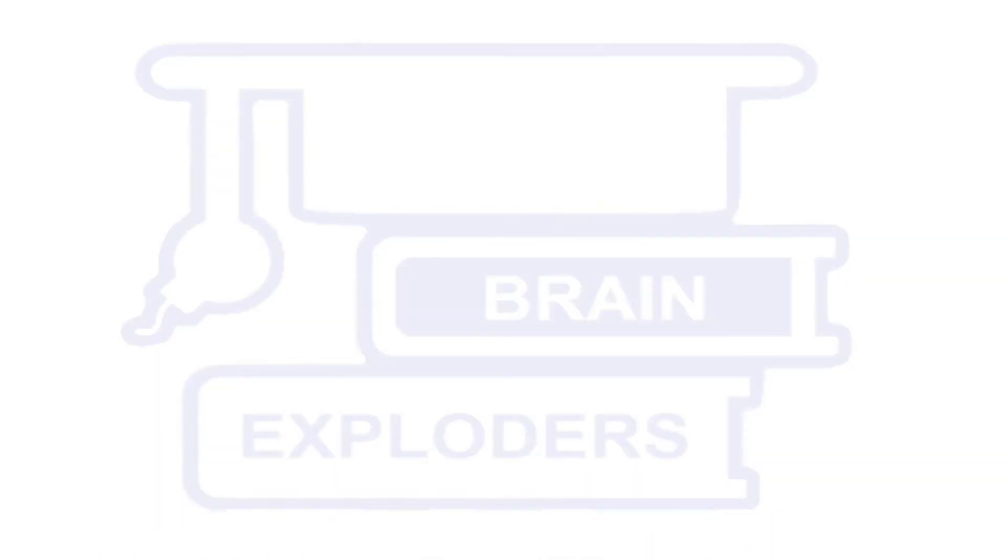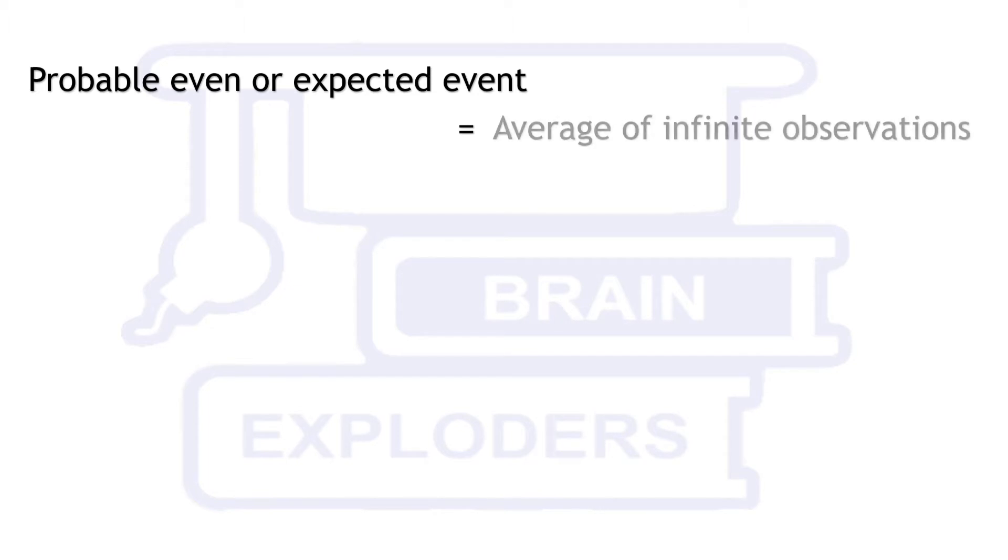Probable event or expected event is the average of infinite number of events. Probable event may or may not belong to the set of events. For example, probable number on throwing a die is 3.5. Let's see how.